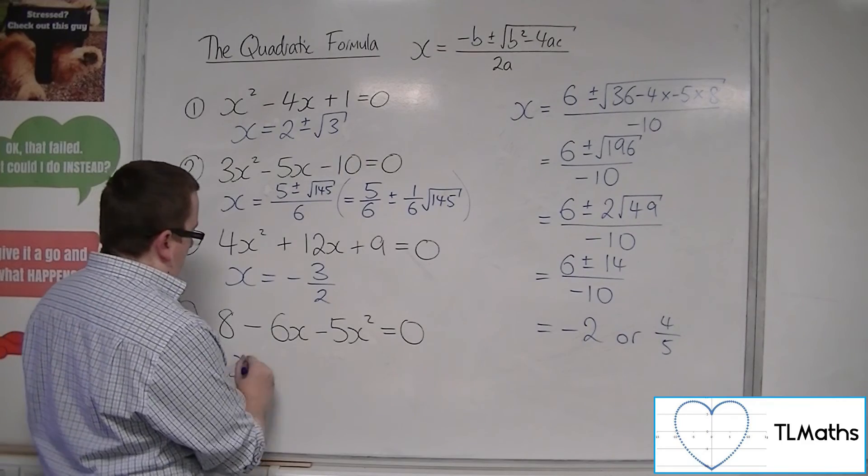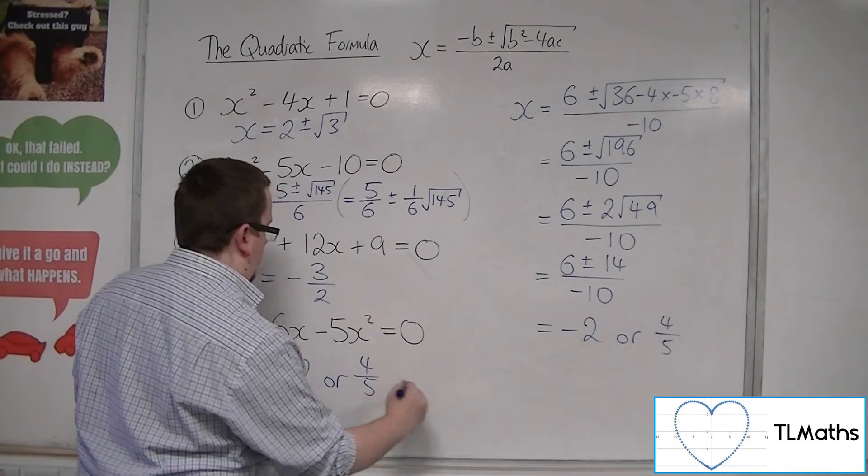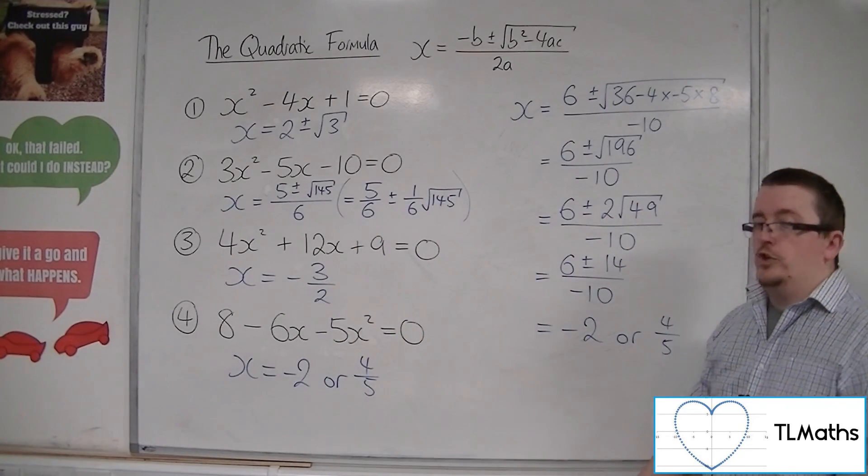So, actually, x equals minus 2, or 4 fifths, okay, and they are the solutions to the final quadratic equation there.